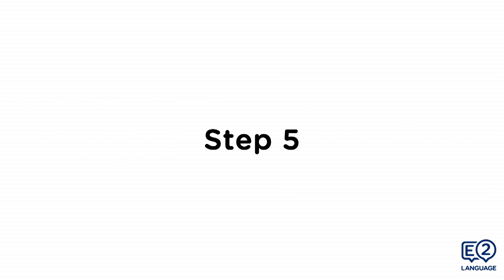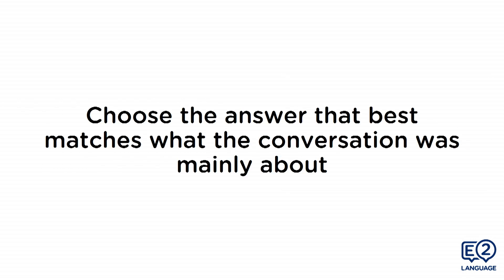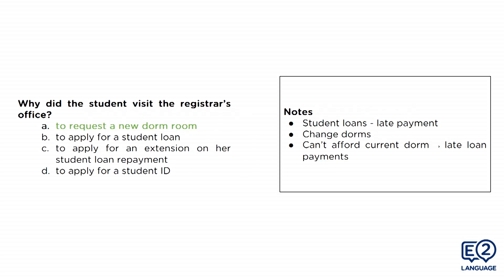Our next step is to choose the answer. You want to choose the one that best matches what the conversation was mainly about. The answer is A — to request a new dorm room. Hopefully that wasn't too bad.